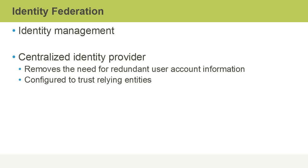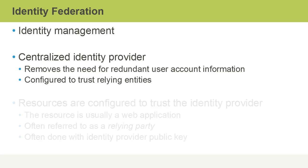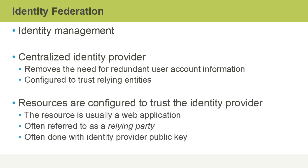A relying entity, for example, might be a web application server that we will authenticate user access to. Resources are configured to trust the identity provider — that's an example of a relying entity such as a web application. This is often also called a relying party, and normally the public key from a certificate or key pair used by the identity provider is made available to the relying party.